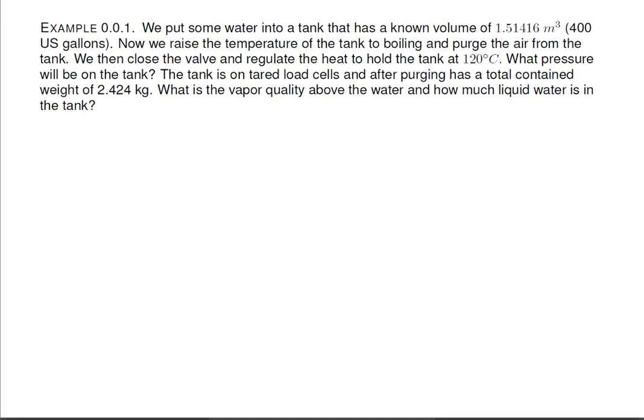Now we'll go through a quick example. We put some water into a tank that has a known volume of 1.5 cubic meters, or 400 U.S. gallons. Now we raise the temperature of the tank to boiling and purge the air from the tank. We then close the valve and regulate the heat to hold the tank at 120 degrees C. What pressure will be on the tank? The tank is on tared load cells and, after purging, has a total container weight of 2.424 kilograms.